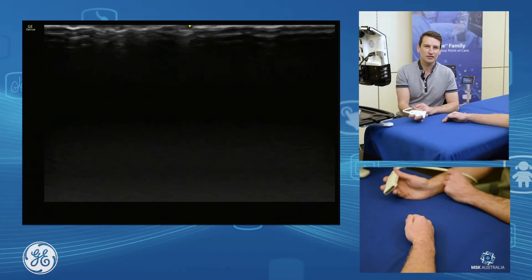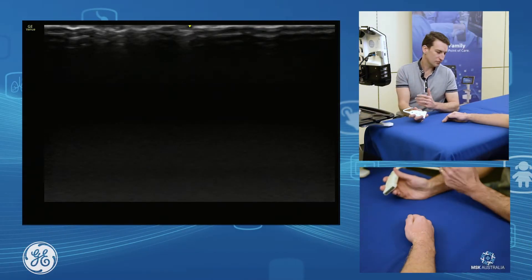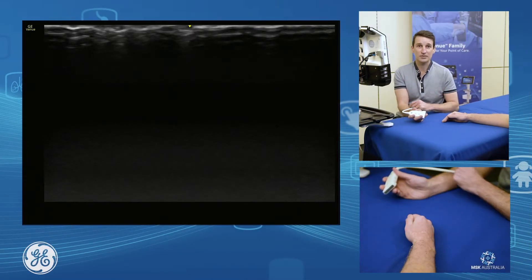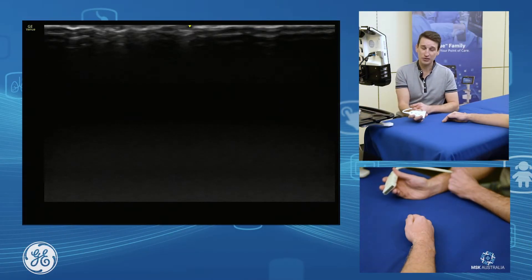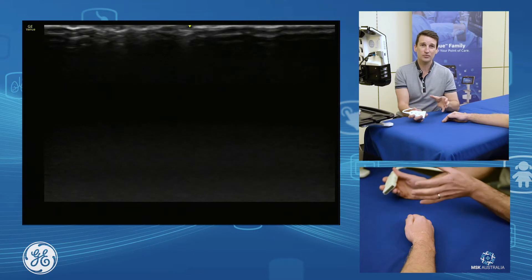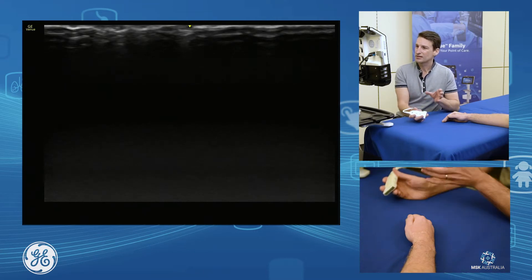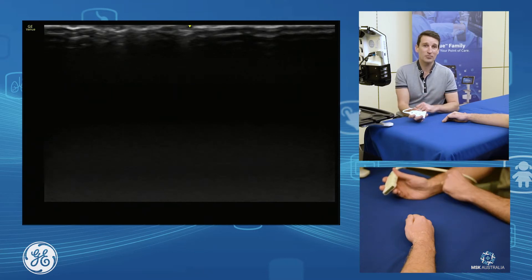We're going to talk about the dorsal aspect of our wrist joint. I'm going to run through the extensor tendon compartments of the dorsal wrist.